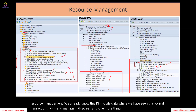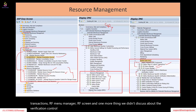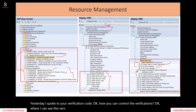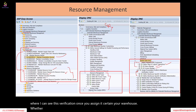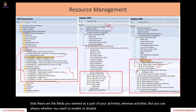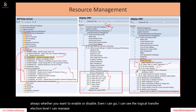One more thing we didn't discuss is verification control. How you can control the verifications — once you assign it to a certain warehouse, whether you can enable or disable these verifications. Even though you assign certain fields as part of your warehouse activities, you can always choose whether you want to enable or disable. I can go to the logical transaction, I can manage it. We will take one example and walk through that.